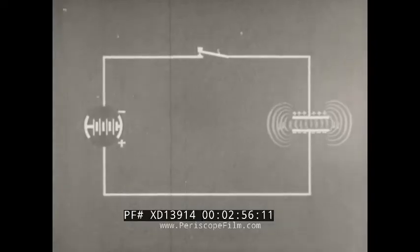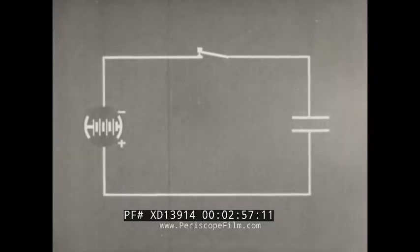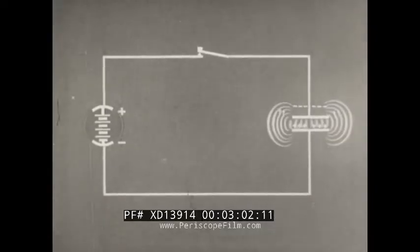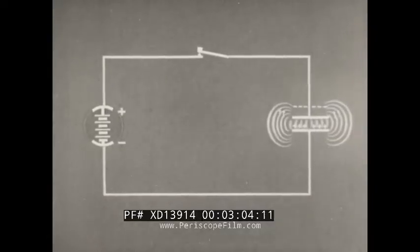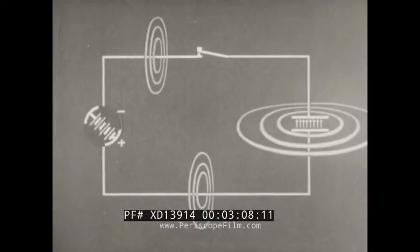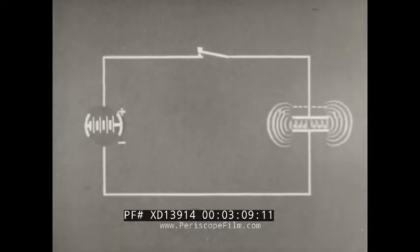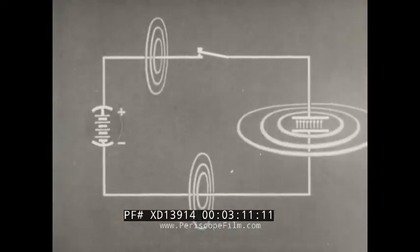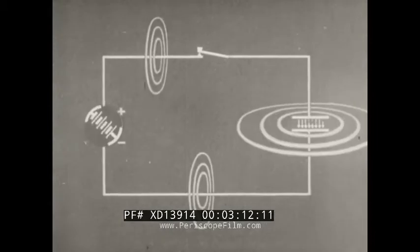If the battery is reversed, the dielectric field collapses. The energy returns to the circuit and then builds up in the opposite direction. Rapid changes in polarity in the circuit result in rapidly changing dielectric and magnetic fields.